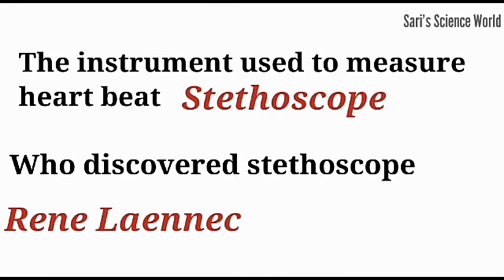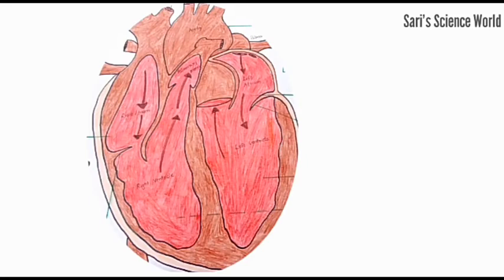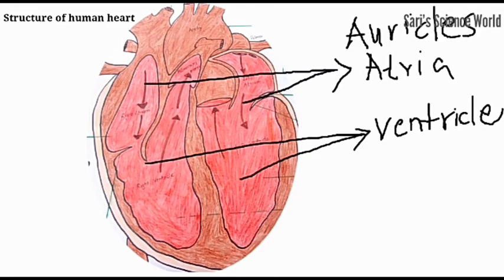The instrument used to measure heartbeat is the stethoscope, discovered by the scientist Renee Laennec. The human heart has four chambers: two upper chambers and two lower chambers. The upper chambers are called auricles or atria, and the lower chambers are called ventricles.